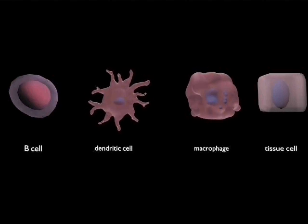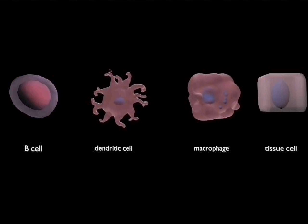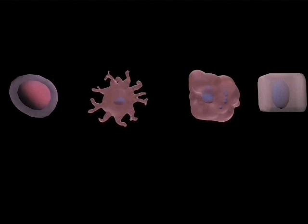The main antigen-presenting cells are the B cell, the dendritic cell, and the macrophage. These cells can present antigen to CD4-positive cells. Additionally, all nucleated cells can present to CD8-positive T cells.